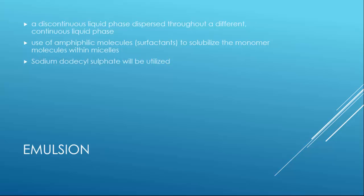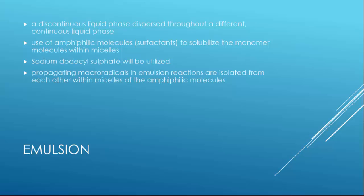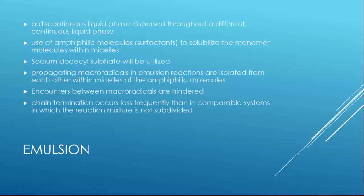The main difference between alternative free radical polymerization, such as those in bulk solution and suspension systems, is that the propagating macromolecules in emulsion reactions are isolated from each other within the micelles of the amphiphilic molecules. The encounters between the macro radicals are hindered as a consequence, and chain termination occurs less frequently than in comparable systems in which the reaction mixture is not subdivided. Often yielding high molecular weight products at faster rates, when suspension or bulk reactions of the same monomers are inefficient.